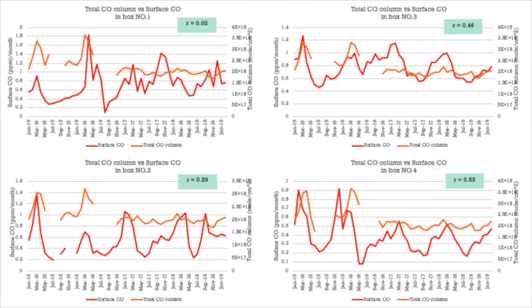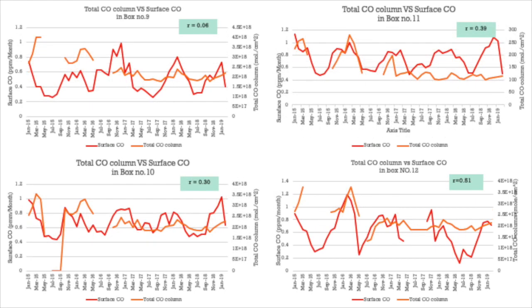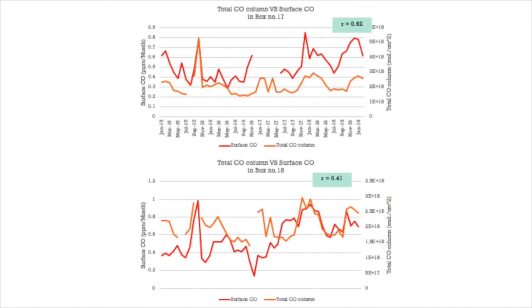The results show graphs between total carbon monoxide column and surface carbon monoxide column from 2015 to 2019, for all 18 boxes. These are presented from box number 1 through 8, then box 9 through 12, and box 13 through 18.